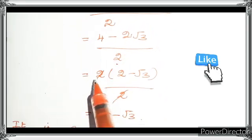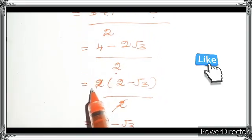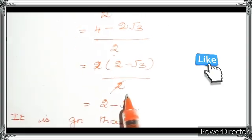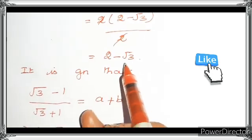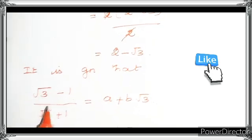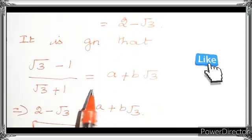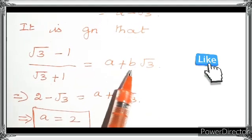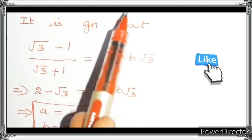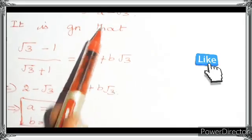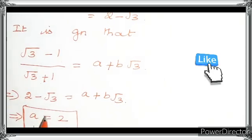So here 2 is common, so I take it as 2 outside — so 2 minus root 3. Both 2s get cancelled, that is equal to 2 minus root 3. So root 3 minus 1 divided by root 3 plus 1 equals A plus B root 3, and we found that root 3 minus 1 divided by root 3 plus 1 equals 2 minus root 3.